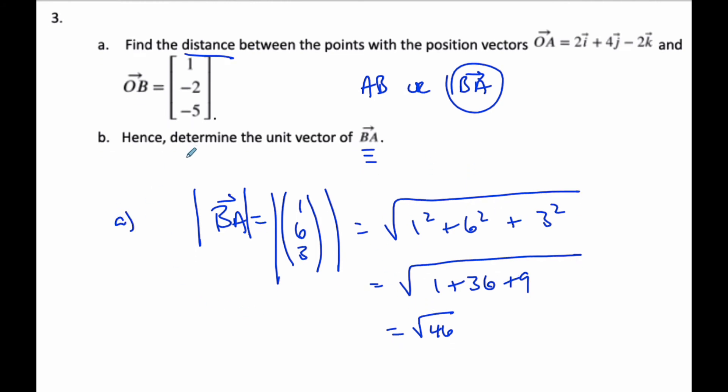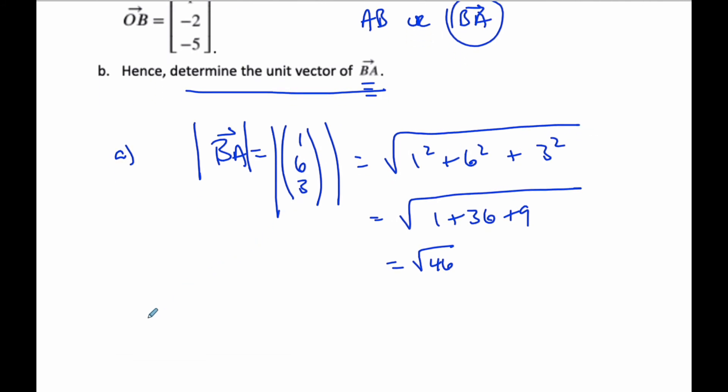This is part A. Now, to determine the unit vector BA, well, the unit vector then is going to be 1 over the square root of 46 times 1, 6, 3. And there we have our unit vector as well.